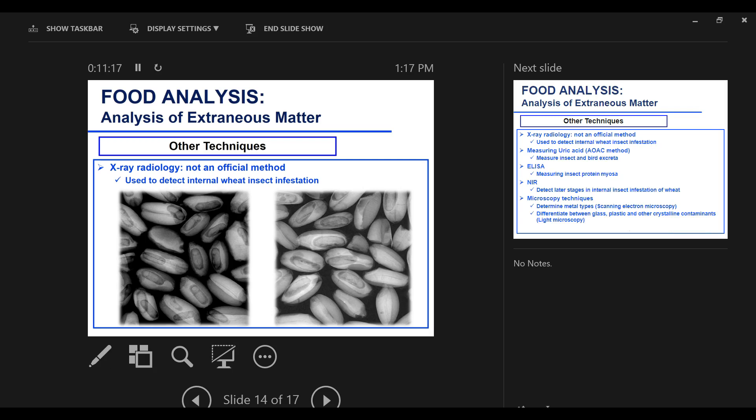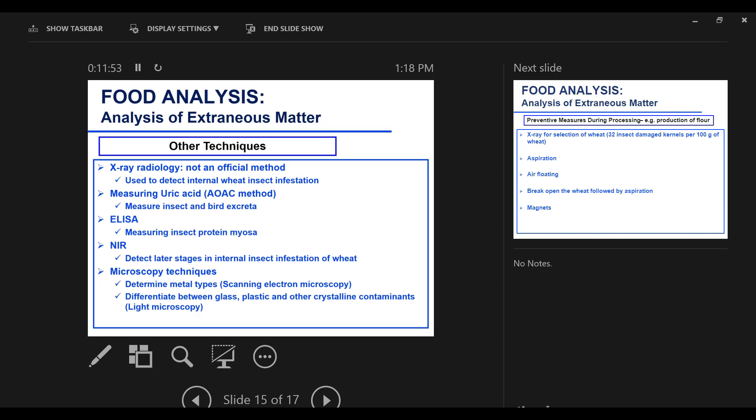If you're looking at grains, per 100 grams of grains, it's okay to have 32 kernels that are infested with insects. Look at this, they are living in there. This is x-ray radiology. It's not an official method, but it allows you to see the extent of the infestation.